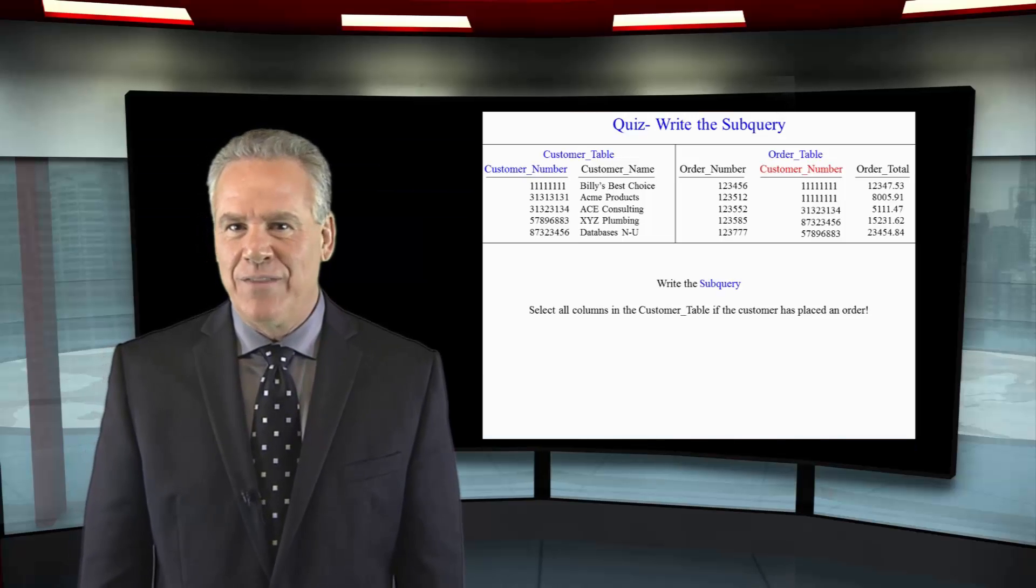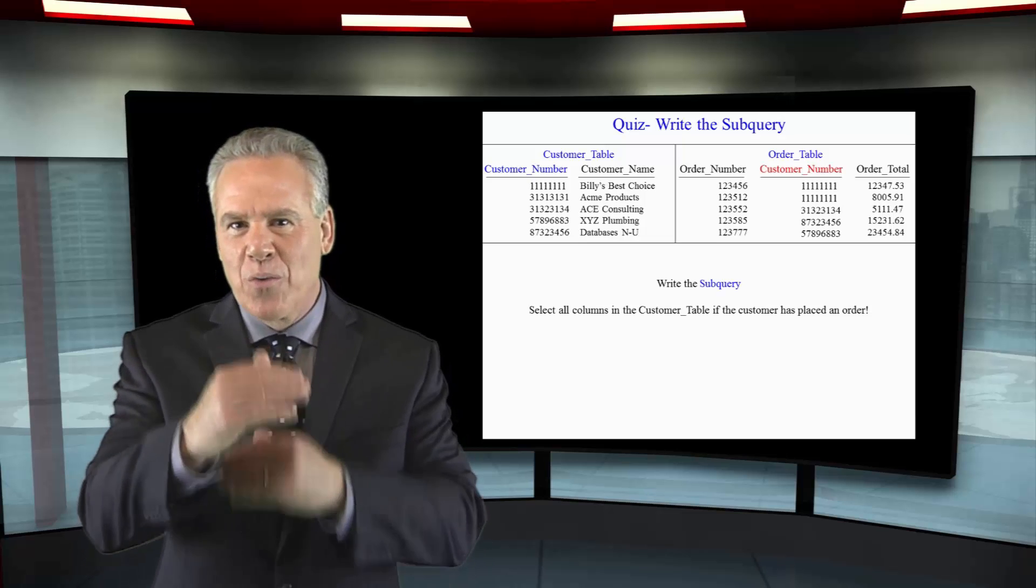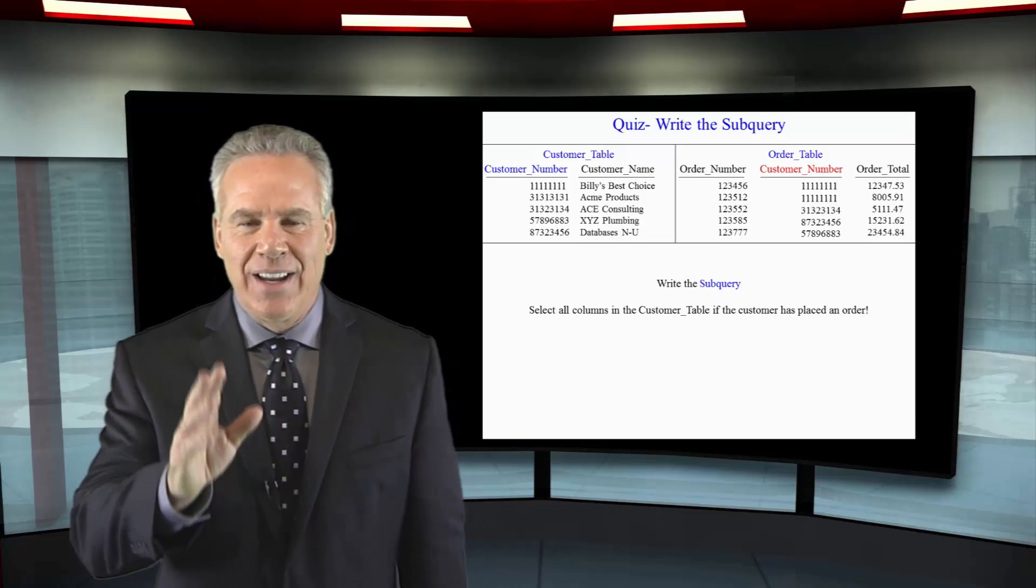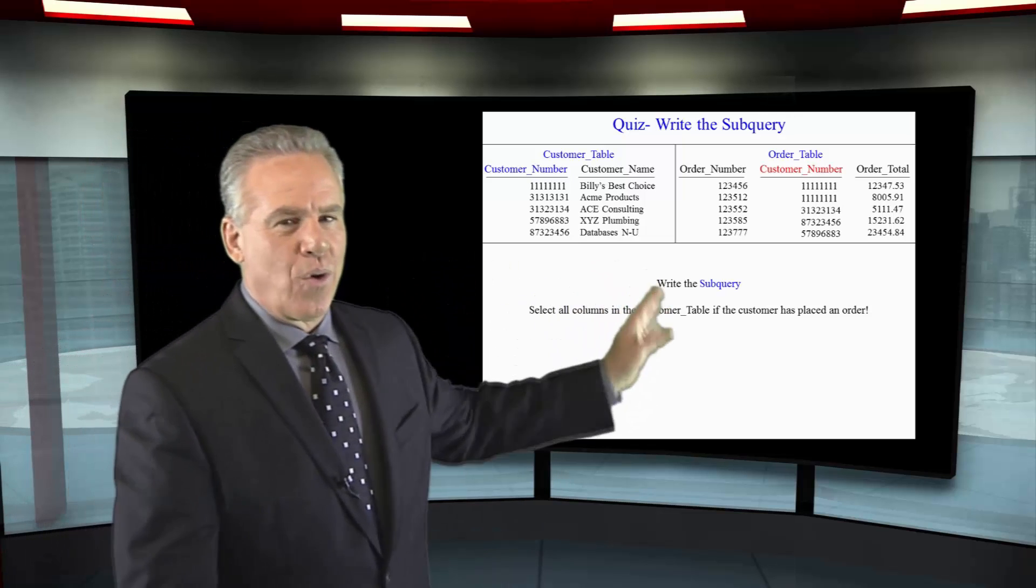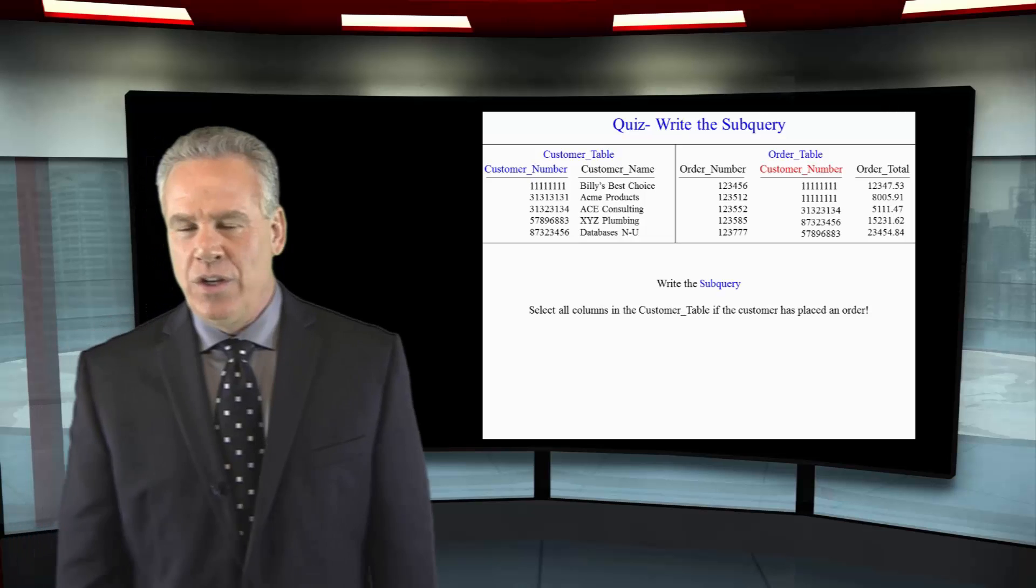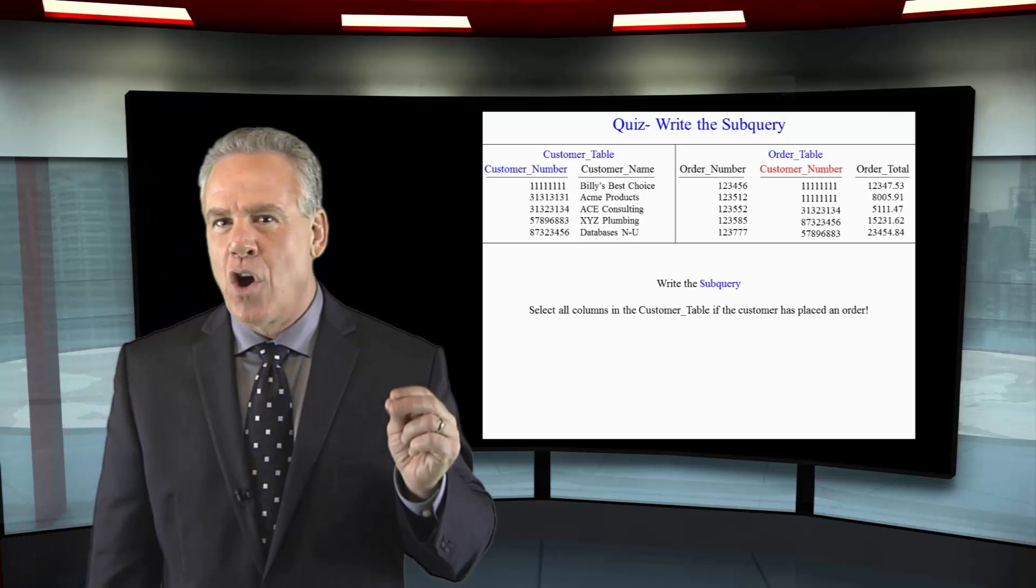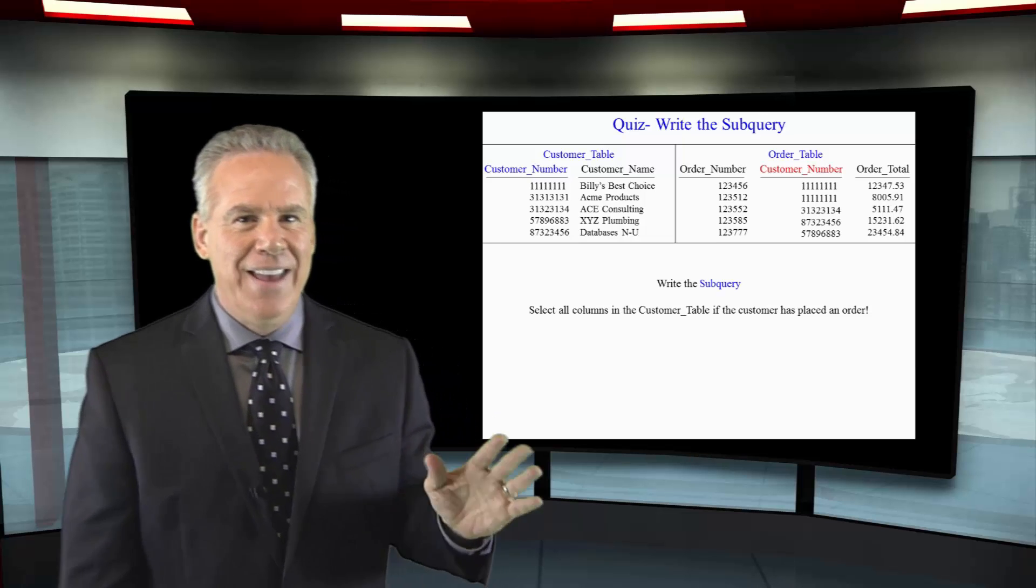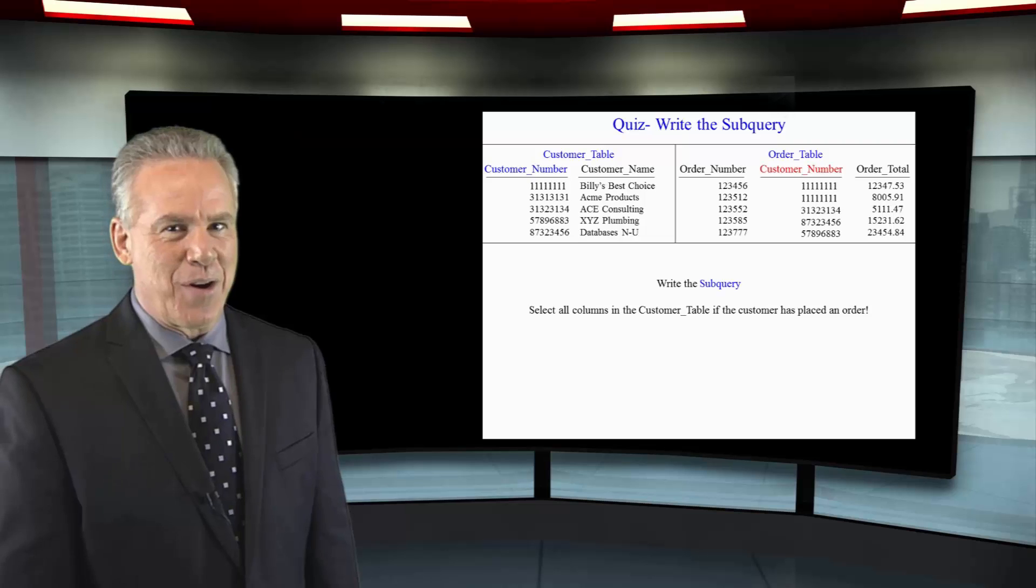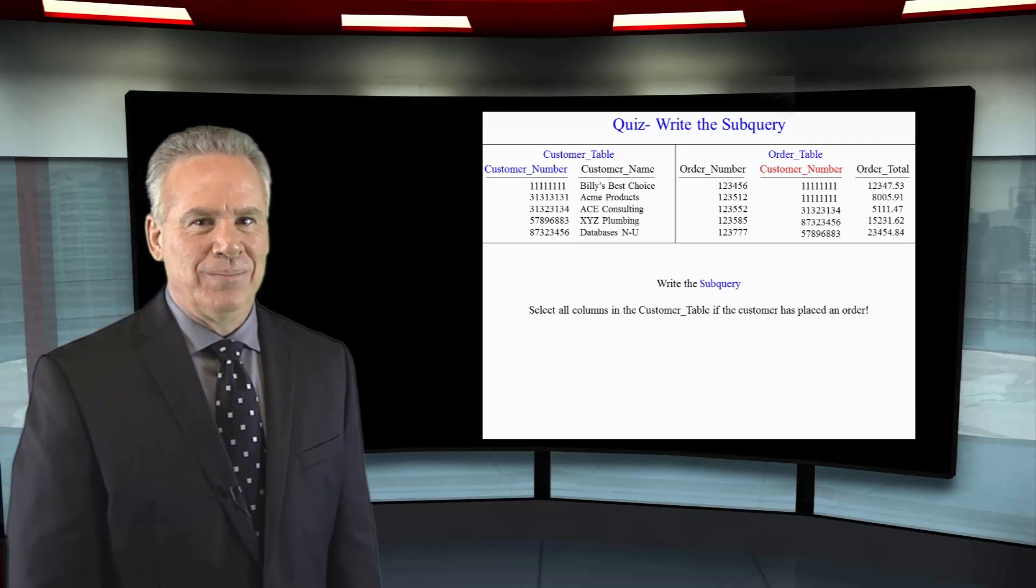Take the information that I've just taught you and prove you are a superstar ready to climb that corporate ladder. Here are two tables, the customer table and the order table. Here is your mission if you decide to accept it. Select all columns from the customer table if the customer has placed an order in the order table. Good luck.